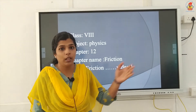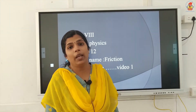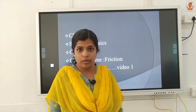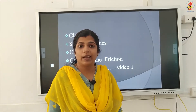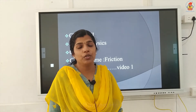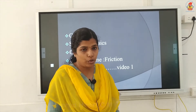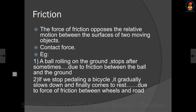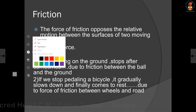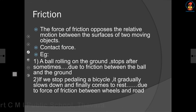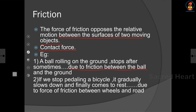Suppose if an object is moving in the east direction, frictional force will be acting in the west direction, because the direction of frictional force is opposite to the direction of motion. Frictional force is a contact force which opposes relative motion between the surfaces of moving objects. A rolling ball on the ground stops after some time due to the friction between the surface of the ball and the surface of the ground.